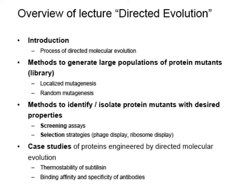In this directed evolution lecture, we've introduced the process of directed molecular evolution. We're going to talk about methods to generate large populations of variants, or protein mutants, otherwise known as libraries — including localized mutagenesis and random mutagenesis. We'll also cover methods to identify and isolate protein mutants with desired properties, including screening assays and selection strategies such as phage and ribosome display, as well as case studies of subtilisin thermostability and antibody affinity and specificity.